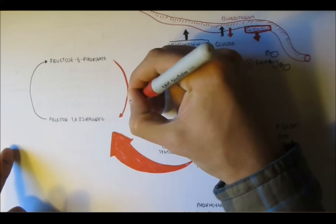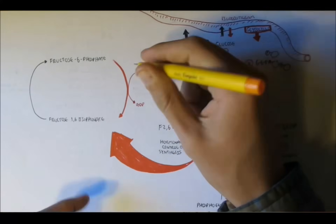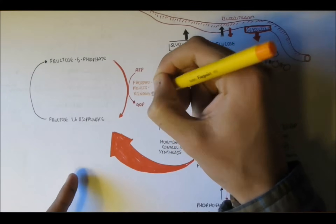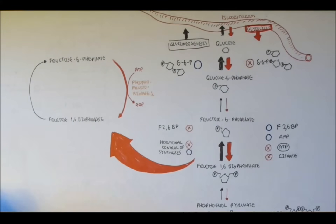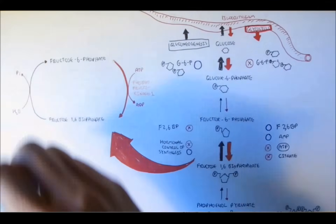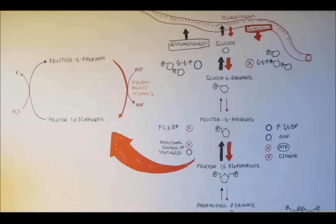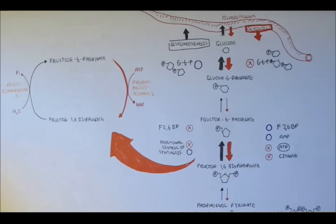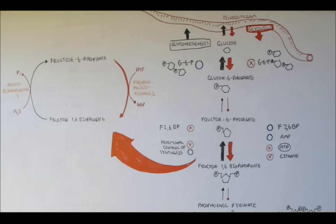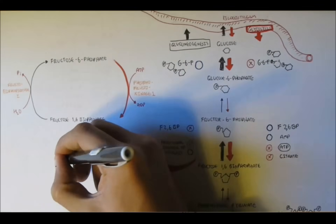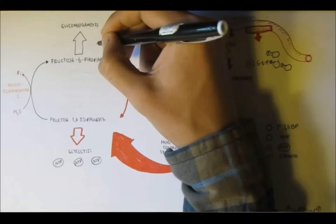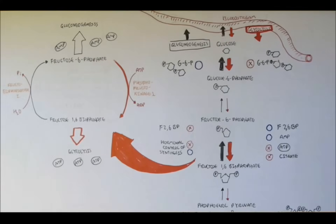From fructose 6-phosphate to fructose 1,6-bisphosphate, the enzyme used is phosphofructokinase 1, and phosphate is obtained from ATP. From fructose 1,6-bisphosphate to fructose 6-phosphate, the enzyme used is fructose bisphosphatase 1. Note the 1 in each of these enzymes. Fructose 1,6-bisphosphate is hydrated to remove the phosphate as inorganic phosphate. Fructose 1,6-bisphosphate will proceed through glycolysis to make more ATP, and fructose bisphosphatase 1 will make more fructose 6-phosphate for gluconeogenesis to make more glucose.